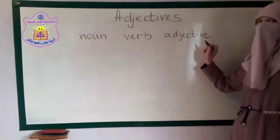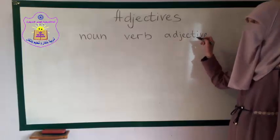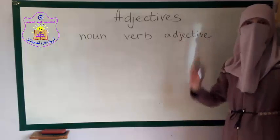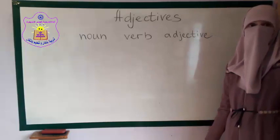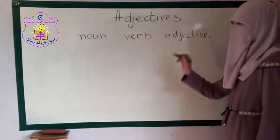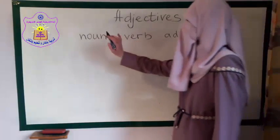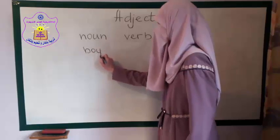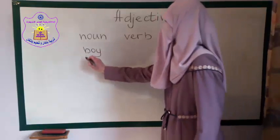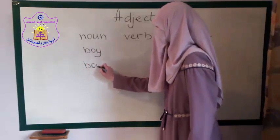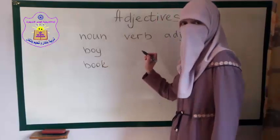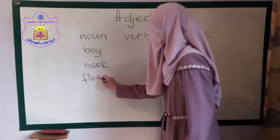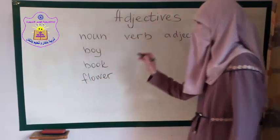We use adjectives to describe nouns. For example, 'boy' is a noun, 'book' is a noun, and 'flower' is also a noun.